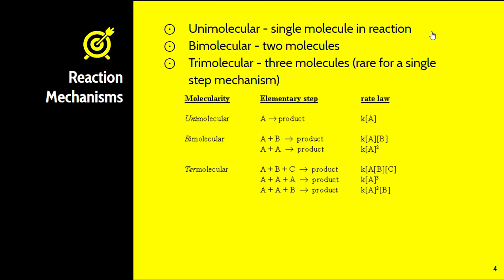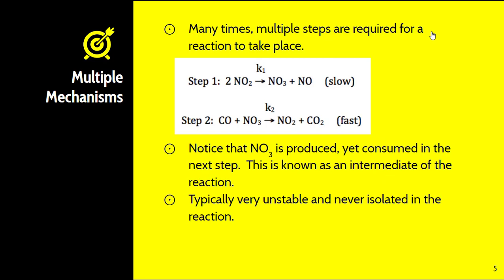The rate laws are directly related to the coefficients in the balanced chemical equation. For bimolecular A plus B, the rate is first order for A and first order for B. If you have two A's, the reaction order for that reactant is two. The total order of the reaction is the sum of individual orders — unimolecular is first order, bimolecular is second order, and trimolecular is third order.